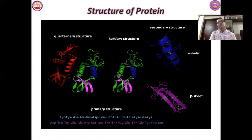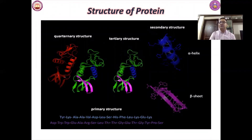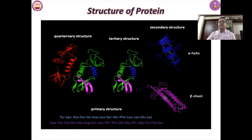Since any protein may be a drug target, the question is at which state the protein structure is functional. Proteins have four different structural levels: primary, secondary, tertiary, and quaternary. The tertiary and quaternary structures are basically the functional forms of the protein.